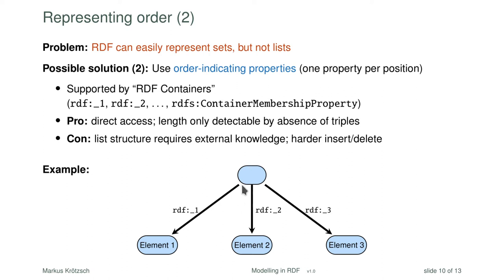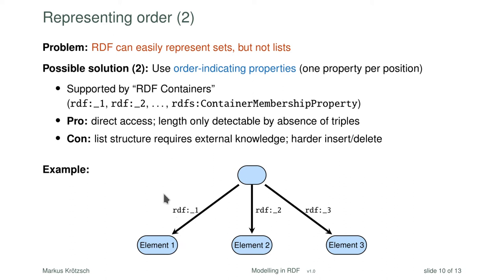Let's look at the example. We have a list of three elements. The encoding looks very simple — we just use the properties for one, two, and three to link to the three elements. The drawing order does not determine the actual order; only the property names define this information. The advantage of this encoding is direct access — we can immediately query for the first or second element. It is also often defined that all of these are special kinds of RDFS container membership properties, so you could use a single query to find all elements with some ontological reasoning.